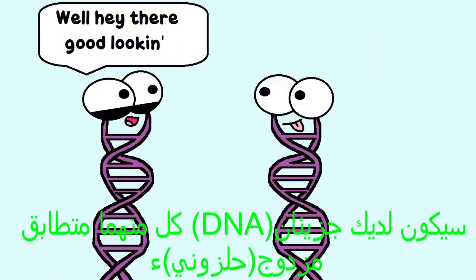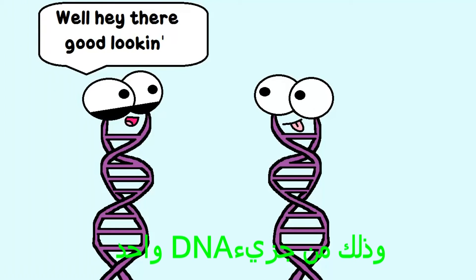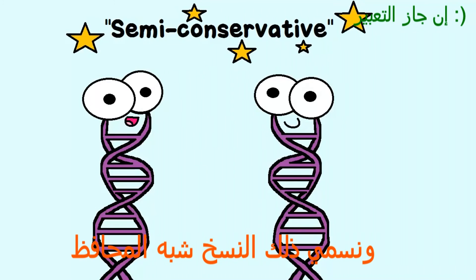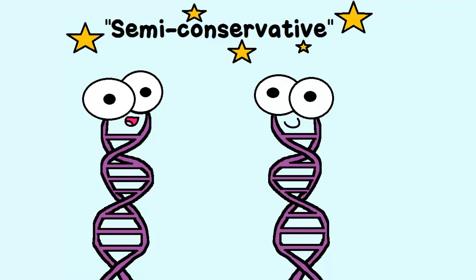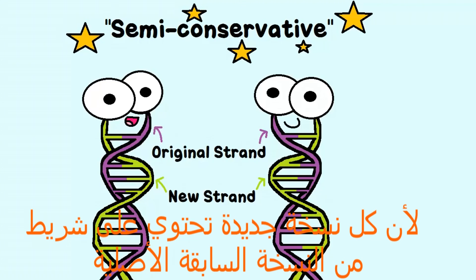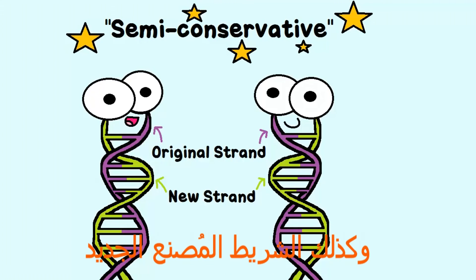Now, at the end, you have two identical double helix DNA molecules from your one original double helix DNA molecule. We call this semi-conservative replication because the two copies each contain one old original strand and one newly made one.